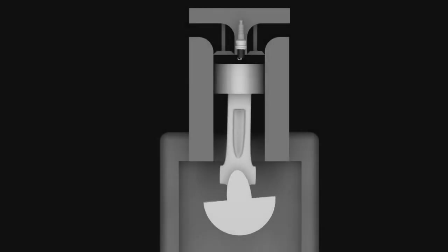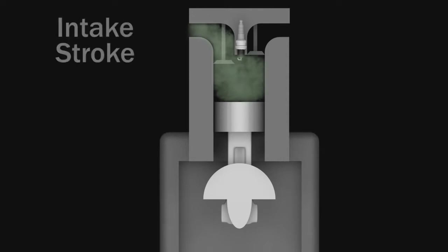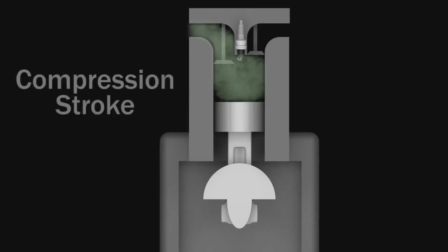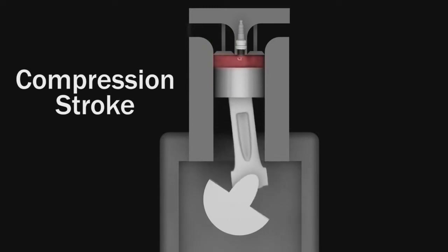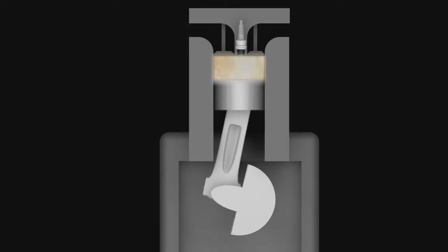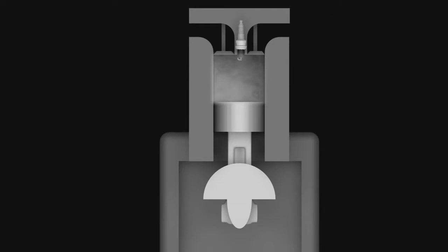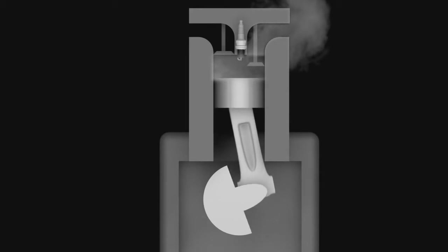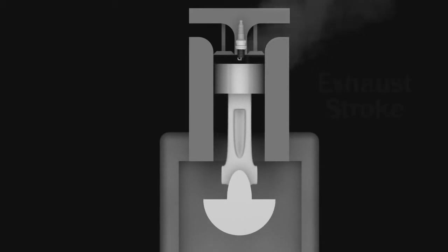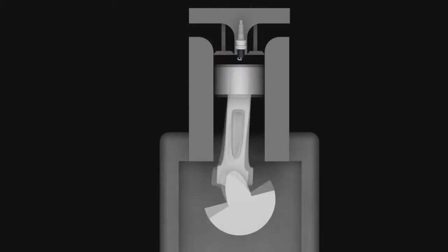For the two-stroke engine, we have the power stroke and also the compression stroke. In this engine, the crankcase is sealed and the outward motion of the piston is used to slightly pressurize the air-fuel mixture in the crankcase. The intake and exhaust valves are replaced by openings in the lower portion of the cylinder wall. During the latter part of the power stroke, the piston uncovers first the exhaust port, allowing exhaust gases to be partially expelled, and then the intake port, allowing fresh air-fuel mixture to rush in and drive most of the remaining exhaust gases out of the cylinder. This mixture is then compressed as the piston moves upward during the compression stroke and is subsequently ignited by a spark plug.